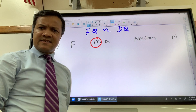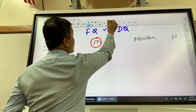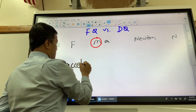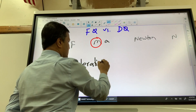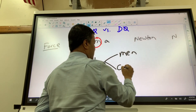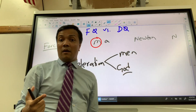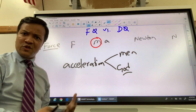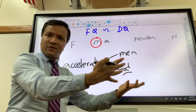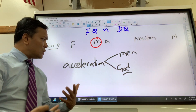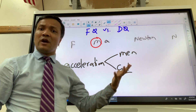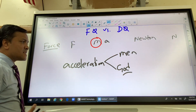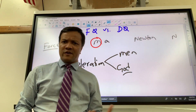There are two types of acceleration: man-made and God-made. By the way, I don't believe in God, but I use the concept as an analogy to help understand something complicated. Man-made acceleration is something you have control over.